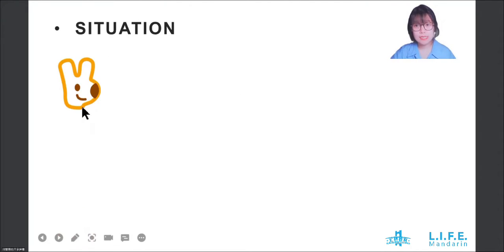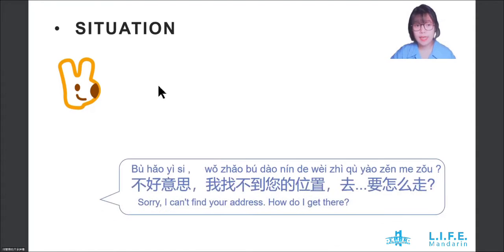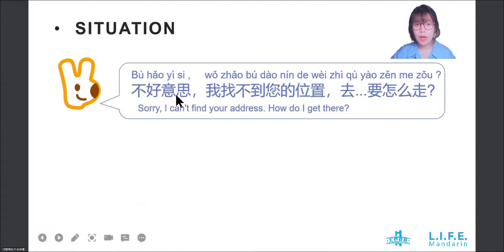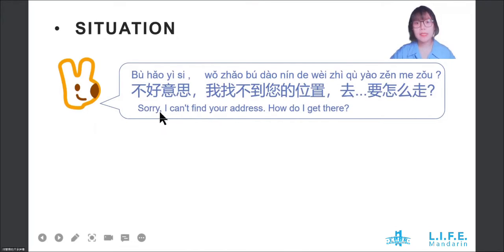This is a takeout delivery man, and he says: 不好意思，我找不到您的位置，要怎么走？ And it means: sorry, I can't find your address. How do I get there?